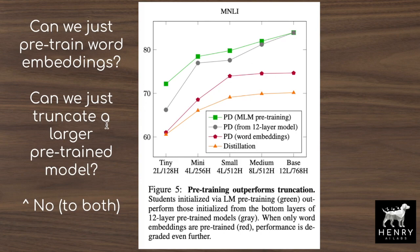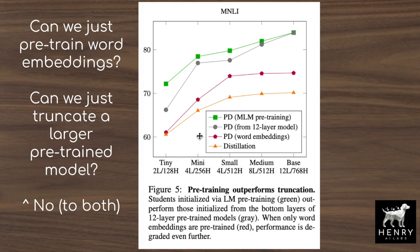The next question is: can we just truncate a larger pre-trained model? You might pre-train BERT-base with 12 layers and 768 hidden dimension and then copy those weights into smaller models. But as this shows, if a four-layer 256 hidden dimension transformer is all you can fit into GPU memory or is more optimized for inference latency, you do get more gains by pre-training that smaller model as well. The answer is no to both questions, as shown by the green chart outpacing both other techniques.